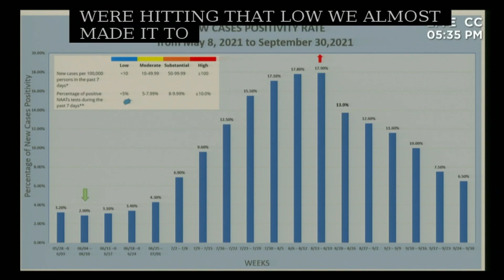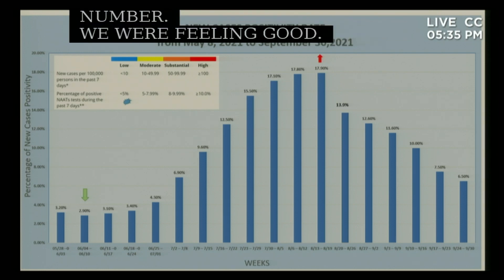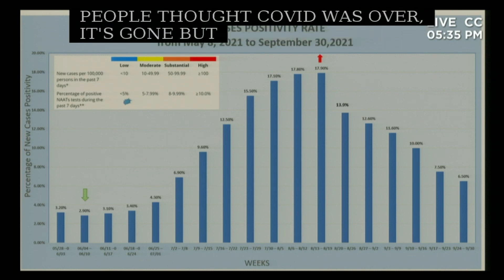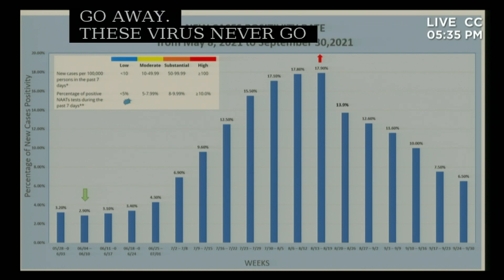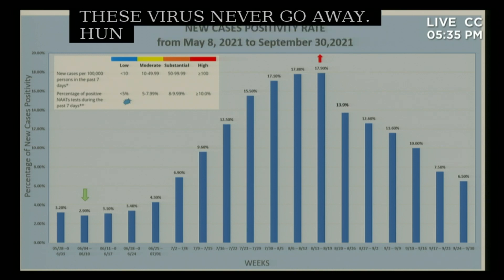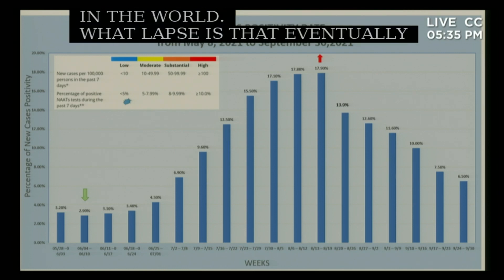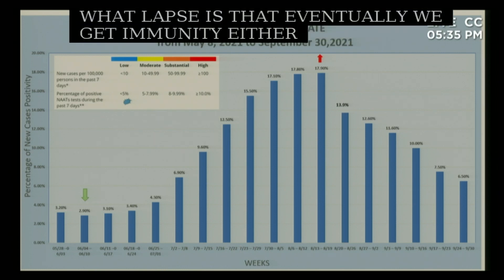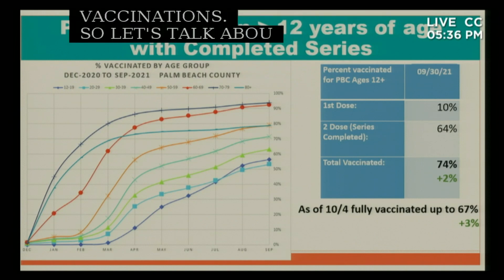Even though we were hitting that low at the beginning of June, we almost made it to low transmission but still had those high cases. It is possible to get down to that number — that's when people were feeling really good and thought COVID was over. But COVID will never go away; these viruses never go away. H1N1 from the 2009 pandemic is still circulating. Eventually we get immunity either by natural infection or by vaccination.